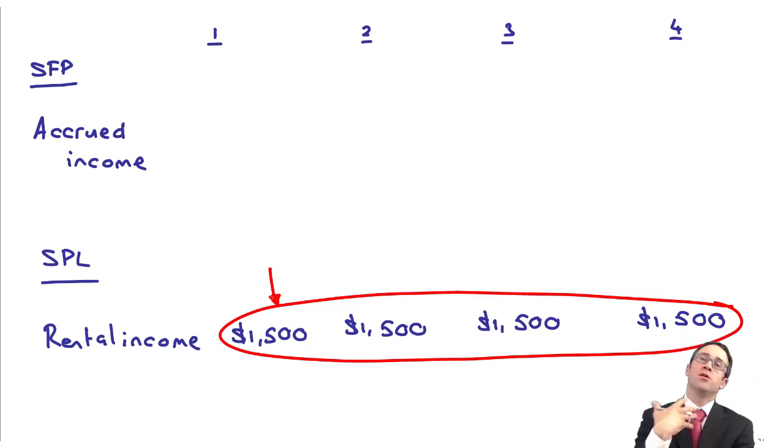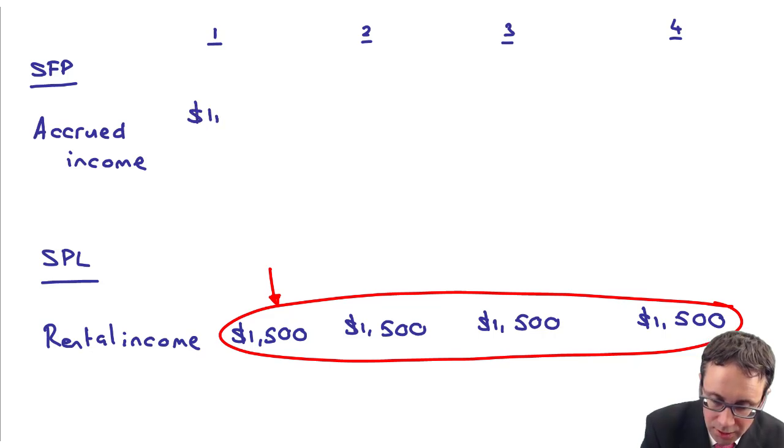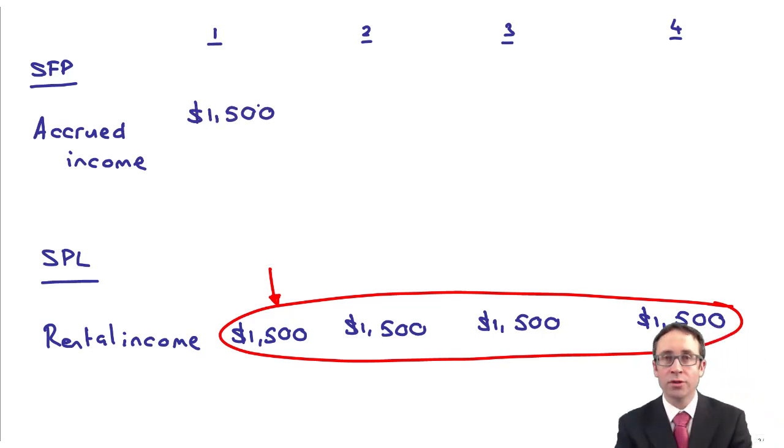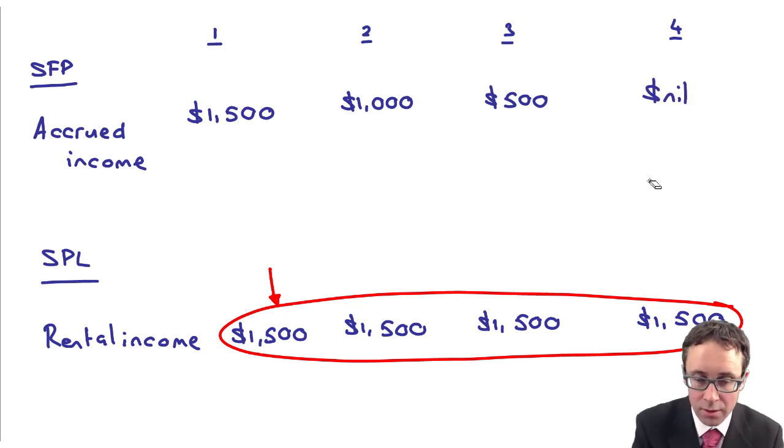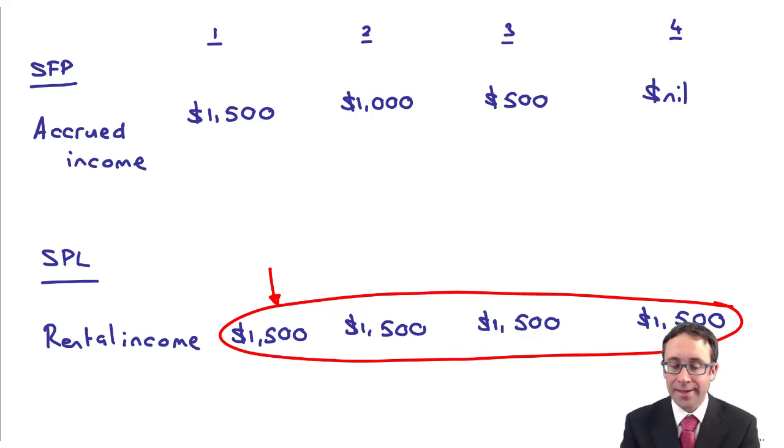The fact there that we have leased out the asset, we are due money from leasing out the asset, and therefore we have recognized the income. Then on the accrued income, this is what happened: in year one we started out with the $1,500. In year two that will then decrease to $1,000. Year three that's $500, and then finally in year four you should find that that has come down to zero.